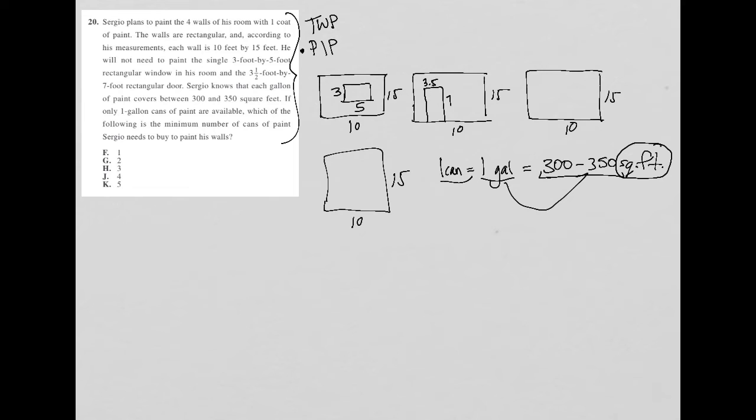So the area, I'll start with the easier walls. The area of this bottom wall here is 150, right? Because base times height or length times width, 10 times 15. The same goes with this wall here. So we have two walls at 150 each. This wall here is also 10 times 15, which is 150.